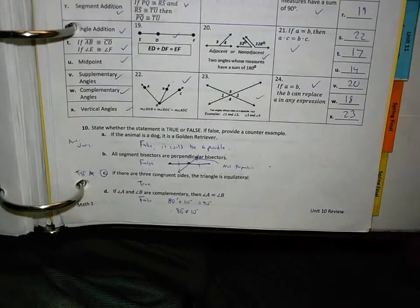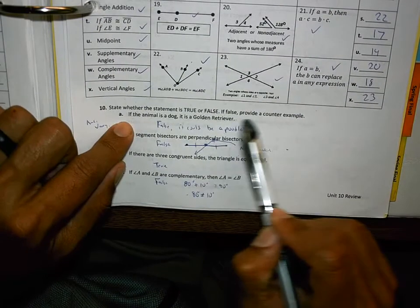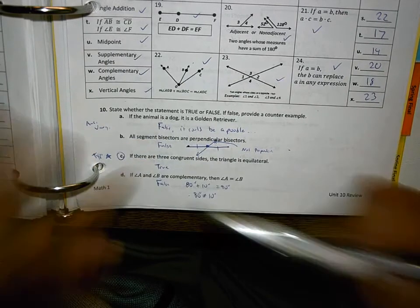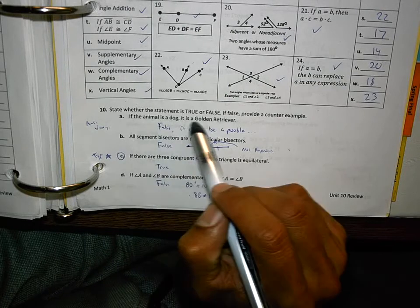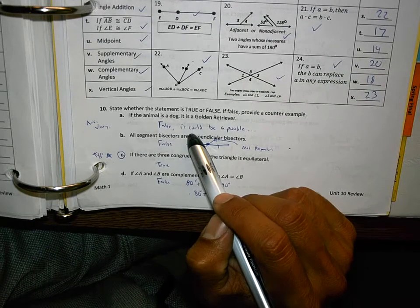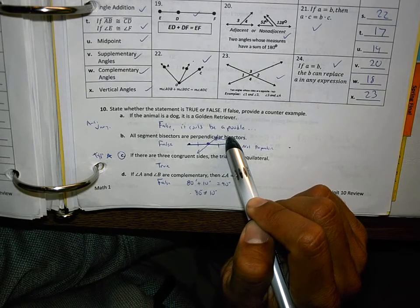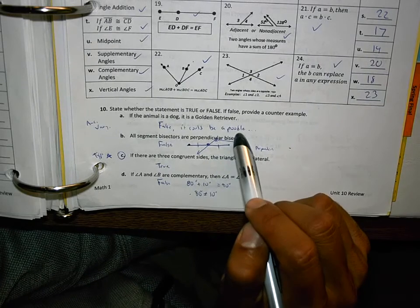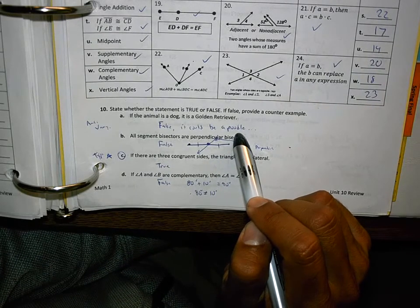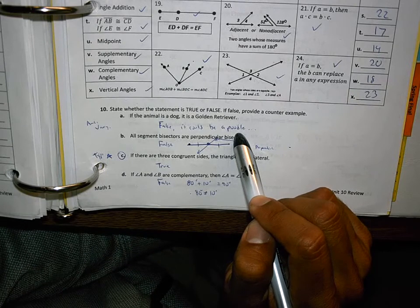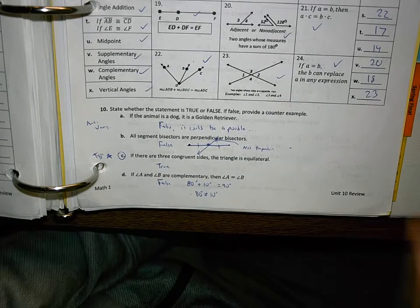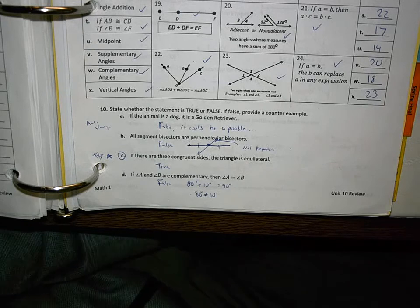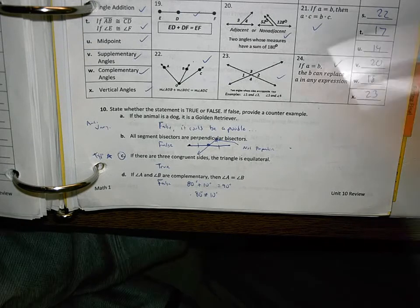Almost done with the review. State whether the statement is true or false. If it's false, provide a counterexample. This goes back to section two again. I got false, false, true, false. If an animal is a dog, then it's a golden retriever. I put it could be a poodle. You can use any counterexample. All you have to have is one to prove that something's false. You could use any example you wanted to. You could use a beagle. See, it just sounds inappropriate, doesn't it? And I'm recording, so I don't want to get in trouble for saying that one.